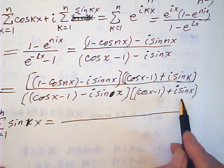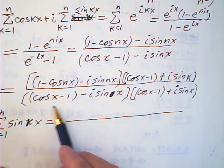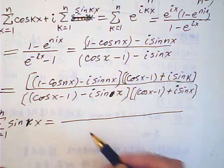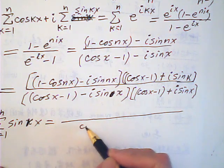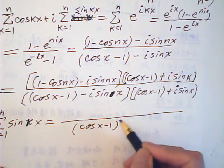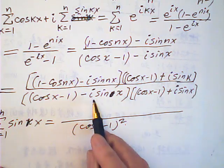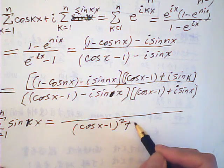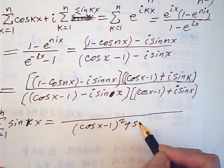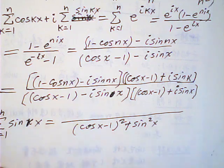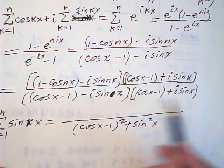The denominator will be: this squared minus that squared — that is cosine x minus 1 squared. Since i squared is negative 1, it's plus sine squared x. That's the denominator.